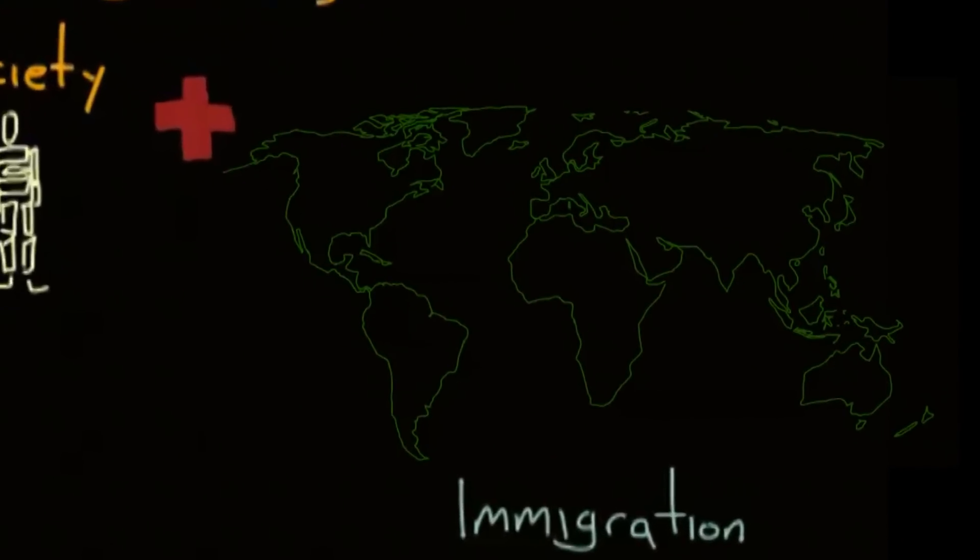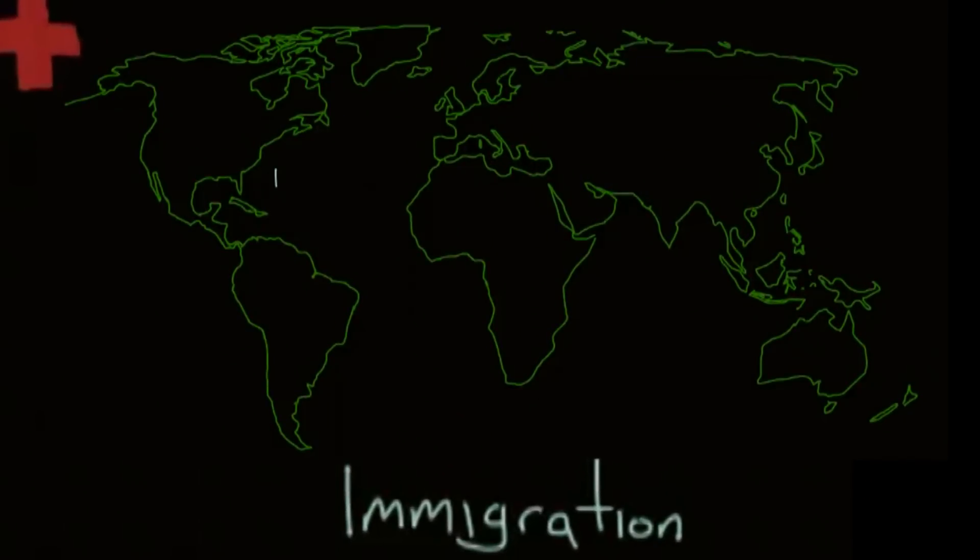Immigrants often face discrimination in their host countries. Discrimination is the unjust treatment of a category of people simply because they belong to that category. Though some discrimination is based on race or ethnicity, the immigration process in many countries is easier for some ethnicities than it is for others. Much of the discrimination is based on an innate fear of anything different.